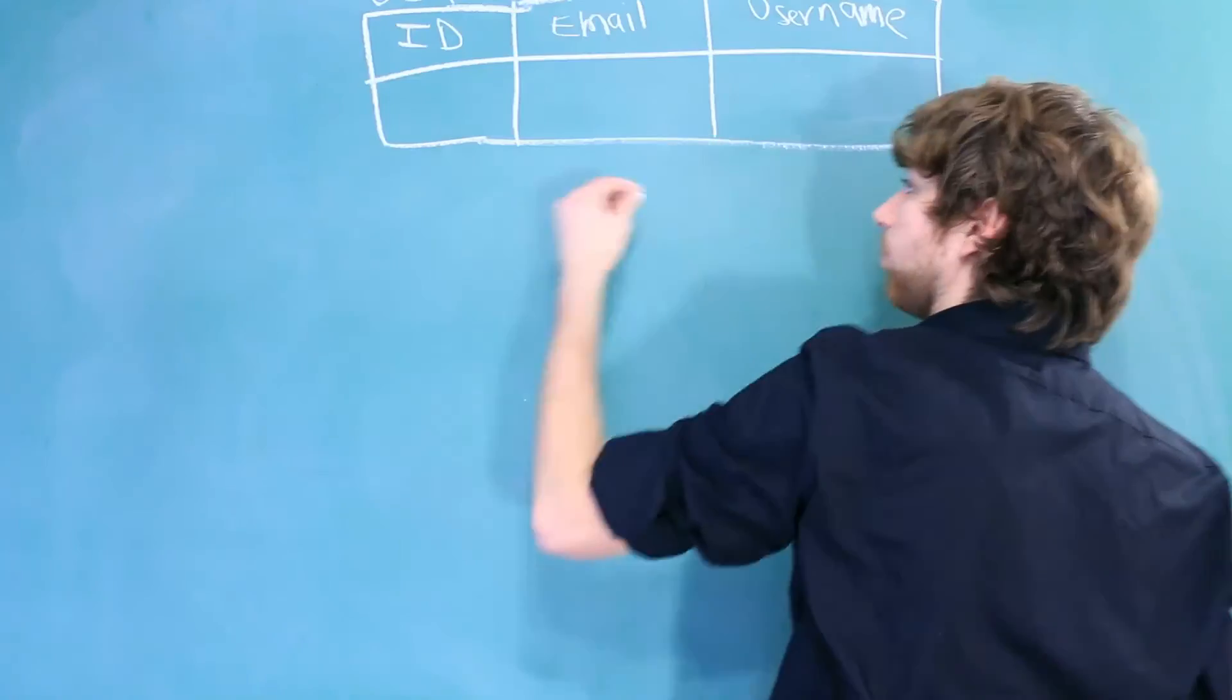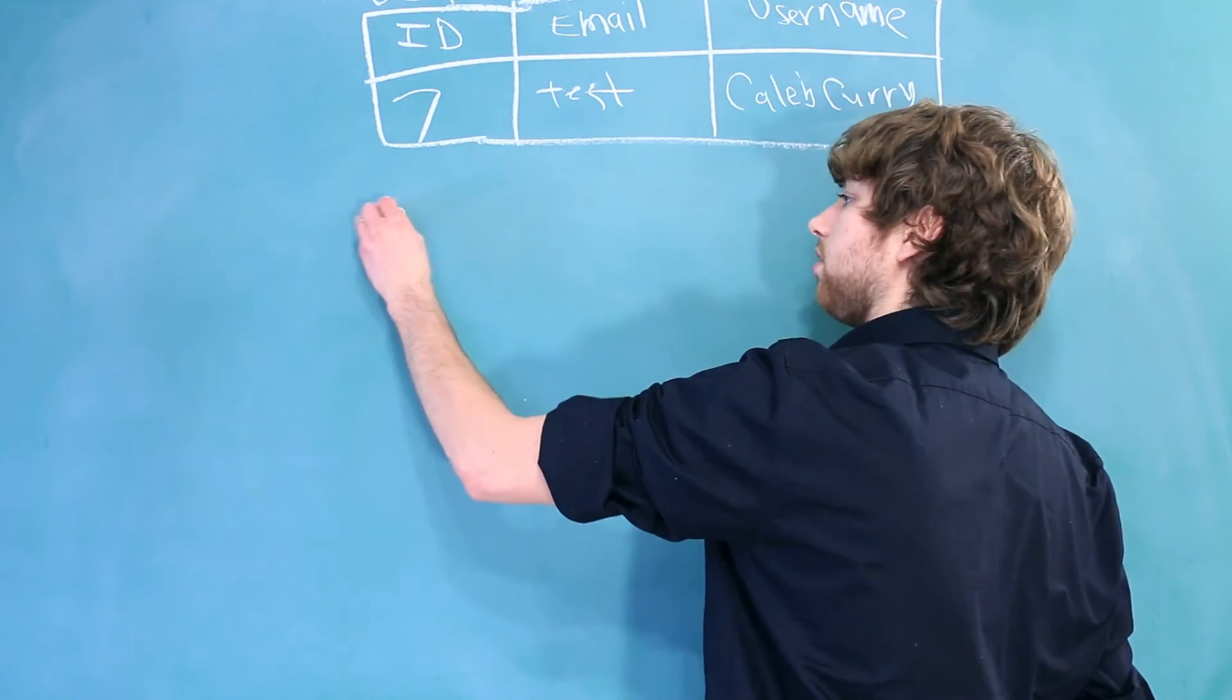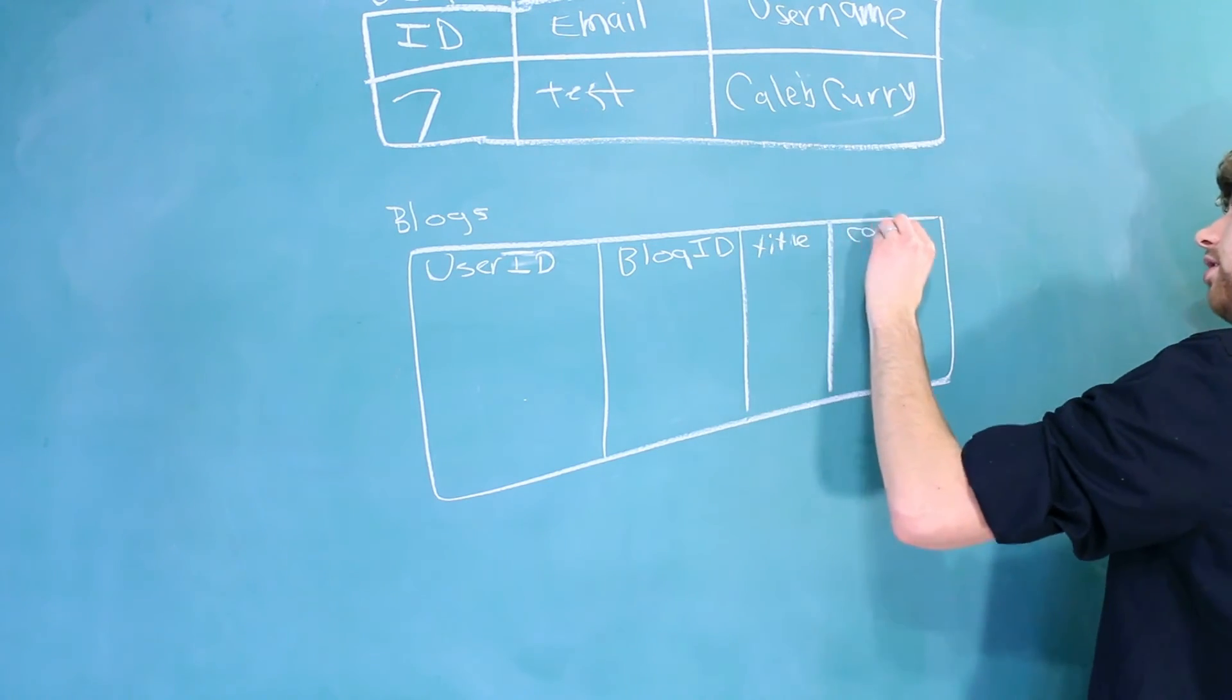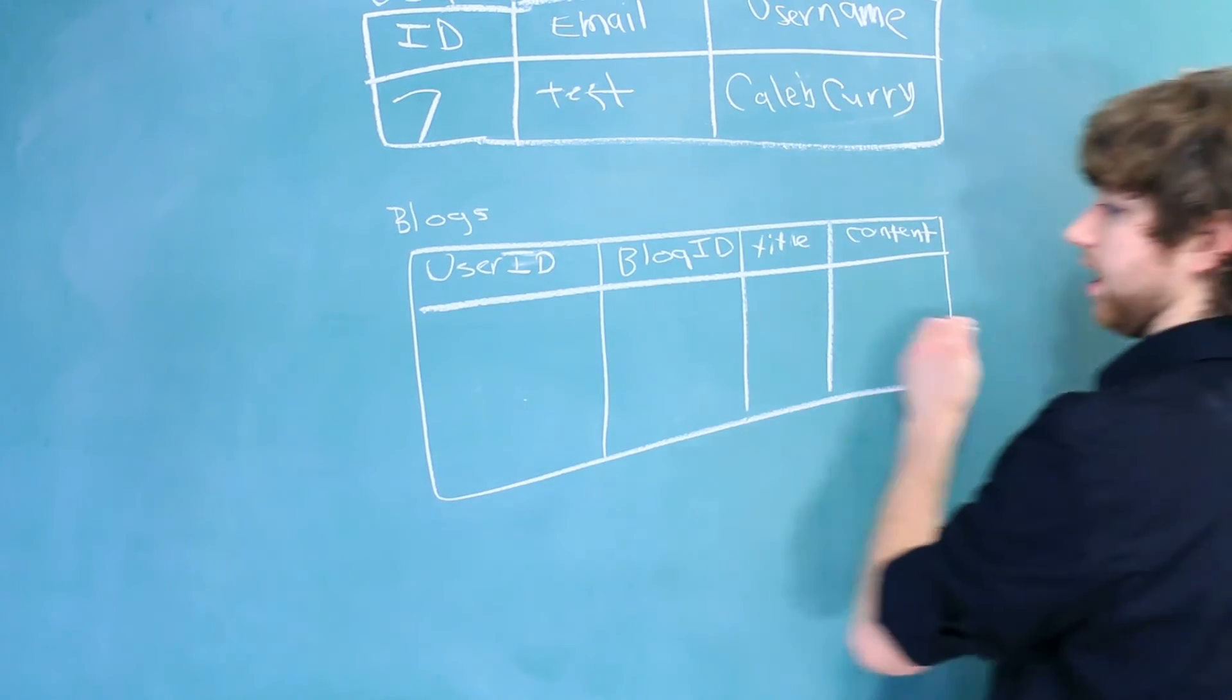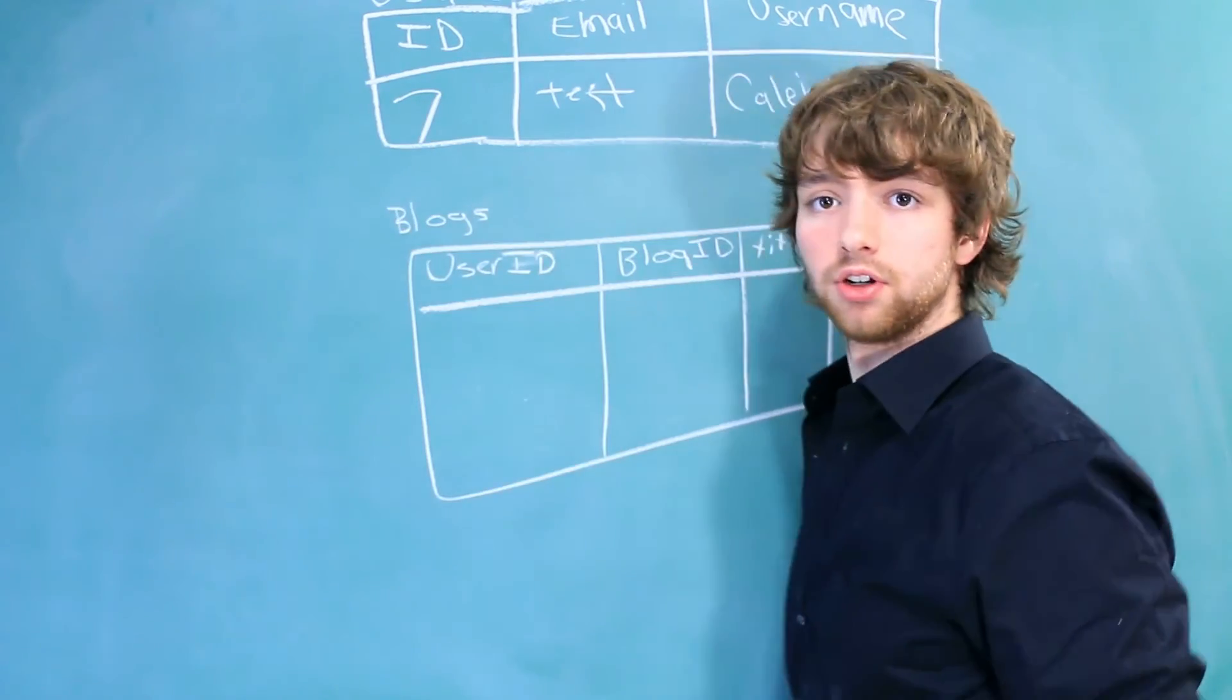So let me just erase this and make a cleaner version of this. We could have a user's table, and one row could be like seven. Then we'd have the blogs table. We have a blog ID, title, and content. And then each blog gets an entry inside of this table and is associated back to one user.